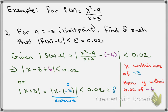But here we know that if x is within 0.02 of -3, then y has to be within 0.02 of -6. This is how you can actually apply the definition to a real problem.